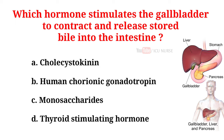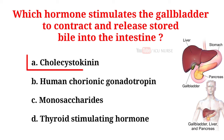Which hormone stimulates the gallbladder to contract and release stored bile into the intestine? A. Cholecystokinin. B. Human chorionic gonadotrophin. C. Monosaccharides. D. Thyroid stimulating hormone. And the correct answer is A. Cholecystokinin.